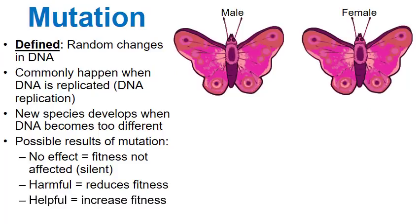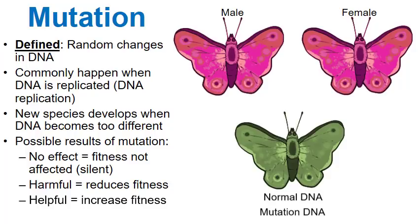But what if a mutation actually provided a benefit to the offspring? Let's say the male passes on normal DNA and the female passes on a mutation, and the offspring inherits a slight color change. This number one could be harmful, but let's pretend that in this particular environment this coloration allows the butterfly to blend better. Here we have an example where a mutation can actually increase the fitness of this individual — it's able to reproduce and pass this mutation on, more and more individuals inherit this DNA, and this little change can spread. This is how mutation leads to a new species.